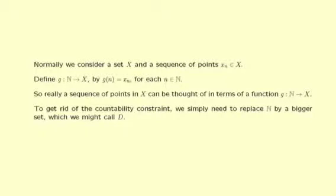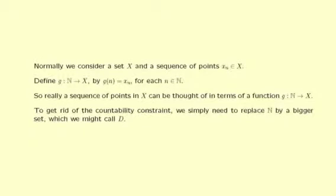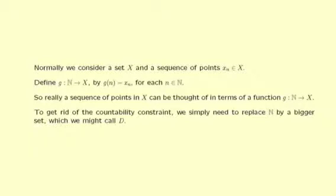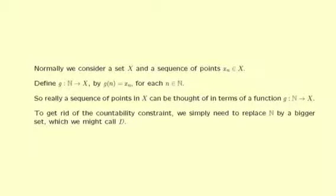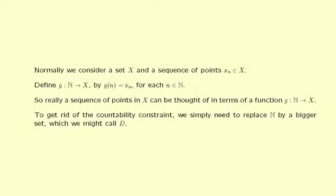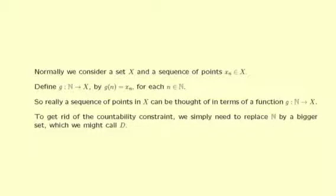So we must generalise the notion of a sequence by removing the countability restriction. Normally, we consider a set X and a sequence of points X_n in X. But let us define a function G mapping the set of natural numbers ℕ into X by G(n) = X_n. So really, a sequence of points in X can be thought of as a function G from the set of natural numbers into X.